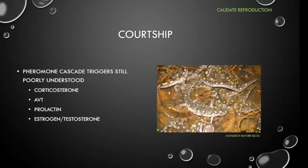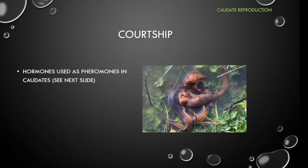The pheromone cascade triggers are still not entirely understood. Corticosterone helps increase hormone levels and pheromone production in some species. Arginine vasotocin is another hormone that triggers pheromone release and is itself used as a pheromone. Prolactin, estrogen, and testosterone are thought to help trigger pheromones and courtship hormones in many species. Hormones themselves can act as pheromones — I've used hormones rubbed on the salamander's nose or cloaca to trigger activity or sperm and egg production.